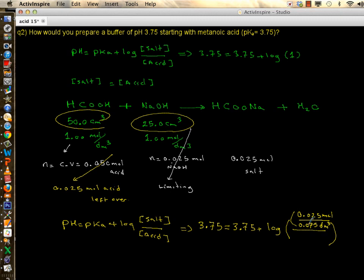Now concentration of your acid is the same thing: 0.025 moles divided by total volume which is 0.075 dm³. This is definitely log one, and log of one is zero. Therefore pH equals pKa. So this is one way to prepare a buffer of desired pH.